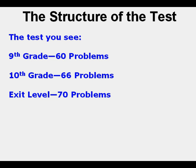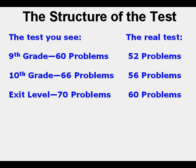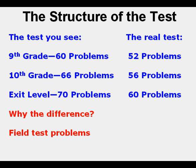Here's the test you see: for 9th grade, 60 problems; for 10th grade, 66 problems; and for exit level, 70 problems. The real test for 9th graders has 52 problems, for 10th graders 56 problems, and the exit level 60 problems. The difference is in field test problems — we'll talk about that a little bit later.